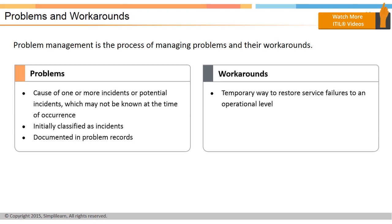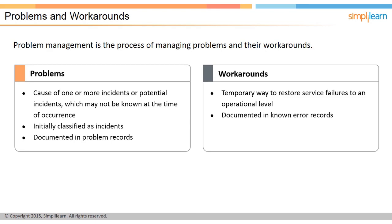The reason behind the server's failure may not be known; however, on rebooting, the service can be restored. Workarounds are used for reducing or eliminating the impact of an incident or problem for which a full resolution is not yet available. Workarounds for problems are documented in known error records, and workarounds for incidents that do not have associated problem records are documented in the corresponding incident records. Incident or problem records are created in the service management tool.